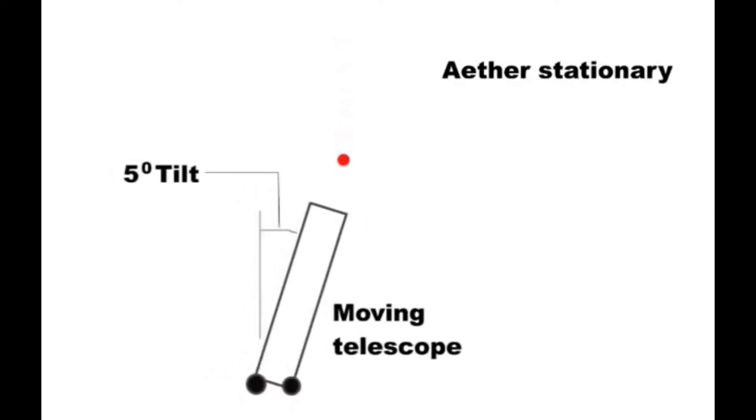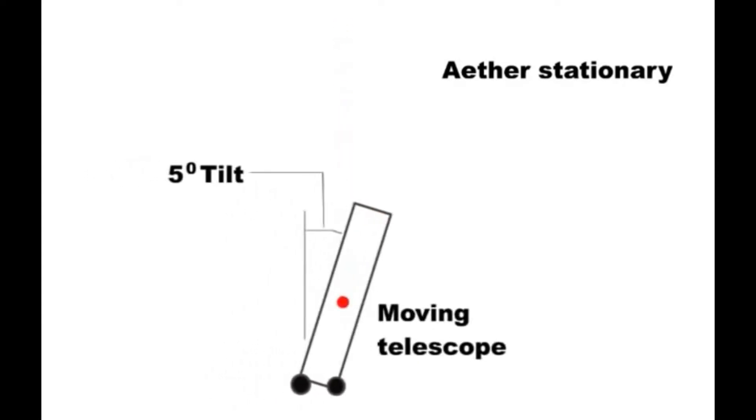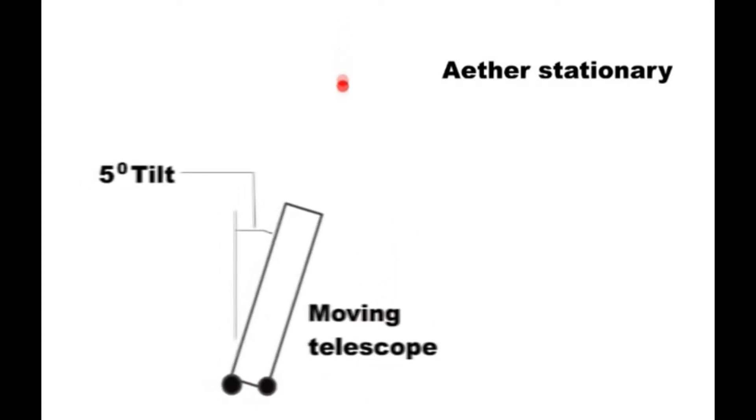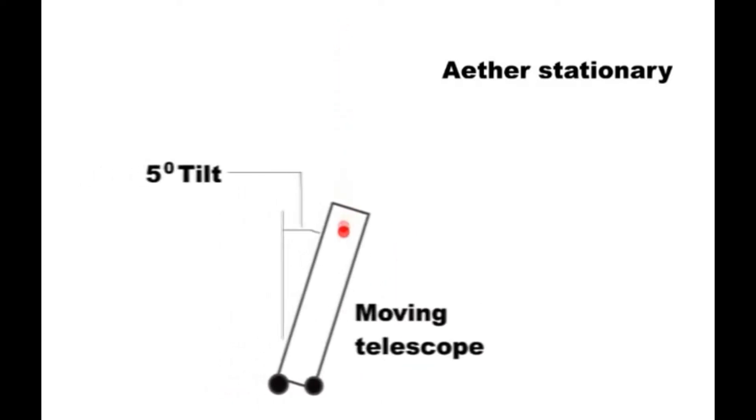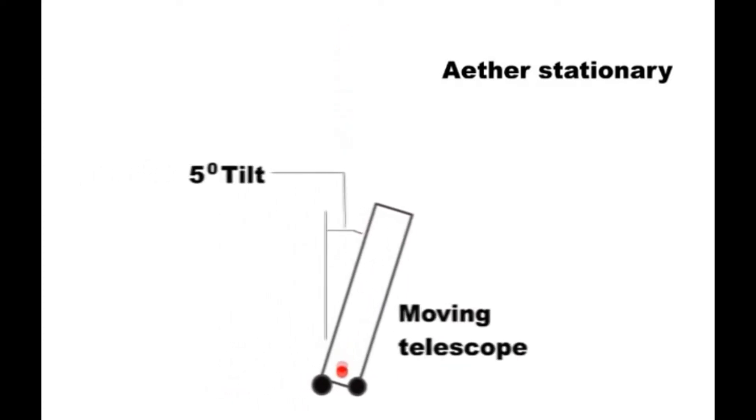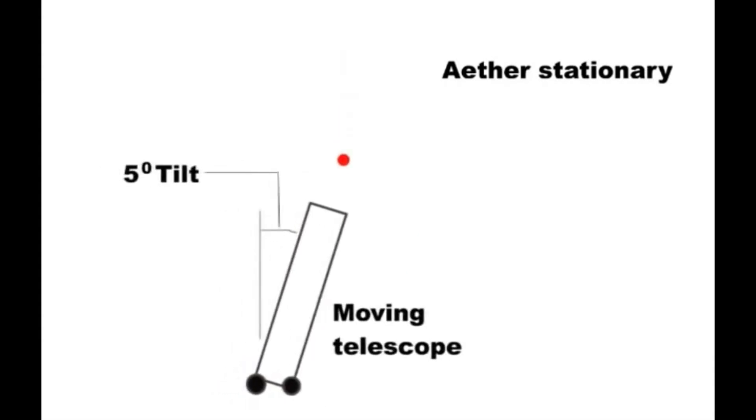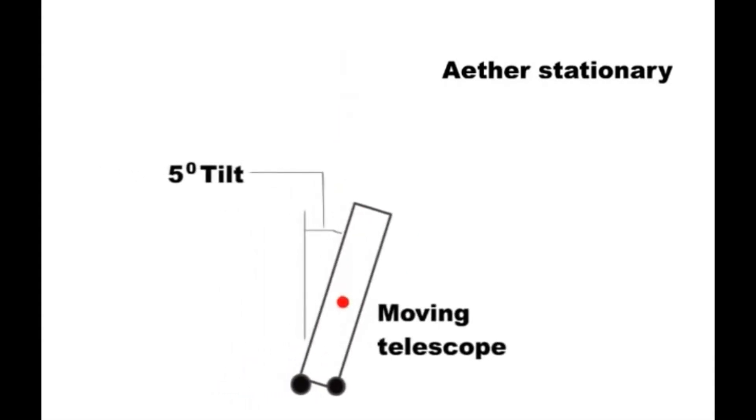In 1729, Bradley found that he had to tip his telescope forward very slightly to get a star in the center of his telescope. It was assumed that this was due to the motion of the Earth around the Sun.